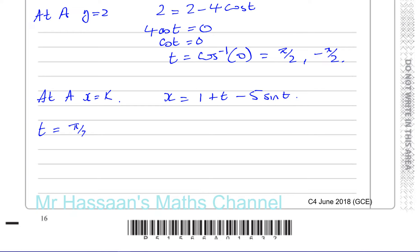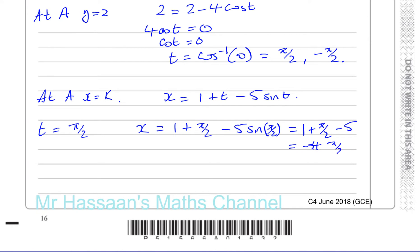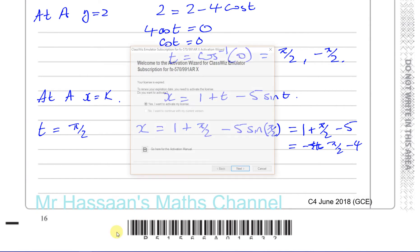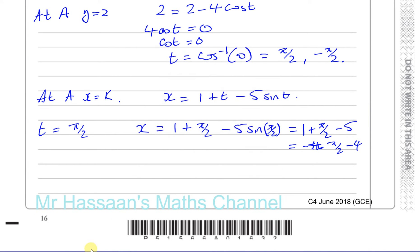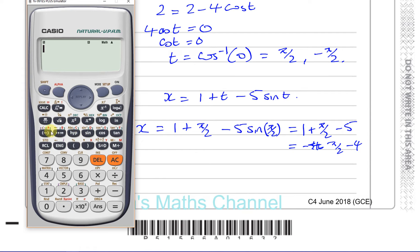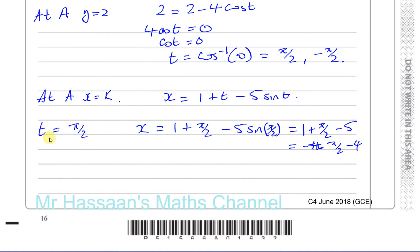When t equals pi over two: x equals one plus pi over two minus five times sine of pi over two. Sine of pi over two is one, so x equals one plus pi over two minus five, which equals pi over two minus four. That's a negative value, so this is not our point A.